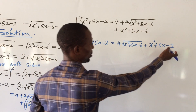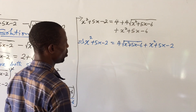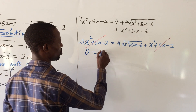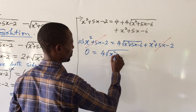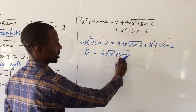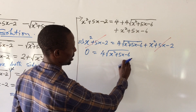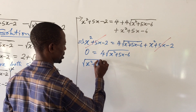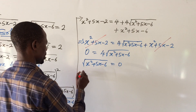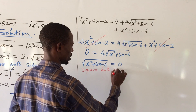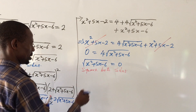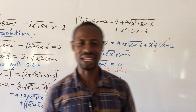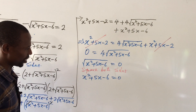Now we discover that x squared plus 5x minus 2 appears on both sides. Collecting like terms, they cancel, leaving us with zero equal to 4 root of x squared plus 5x minus 6. Dividing both sides by 4 gives us: the square root of x squared plus 5x minus 6 equal to zero. Squaring both sides gives us: x squared plus 5x minus 6 equal to zero. We now have a quadratic equation, so let's solve it by factorization.